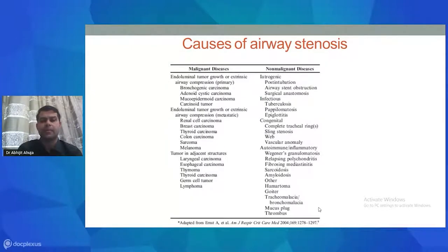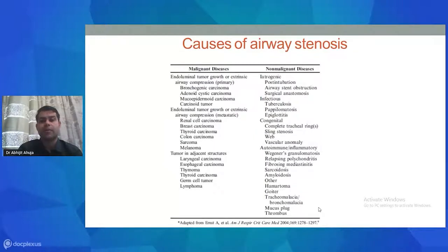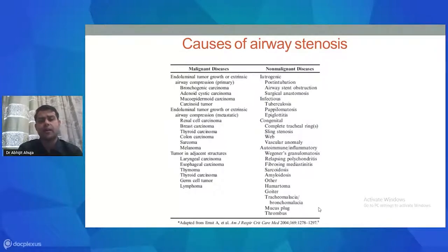In non-malignant diseases, airway stenosis can be differentiated by cause: iatrogenic causes include post-intubation and post-tracheostomy tracheal stenosis. Infectious causes such as tuberculosis, which is quite common in India, affect both the bronchial tree and the trachea. Congenital causes lead to sling stenosis, web, or vascular anomalies. Autoimmune or inflammatory causes include Wegener's granulomatosis, fibrosing mediastinitis, sarcoidosis, and amyloidosis.